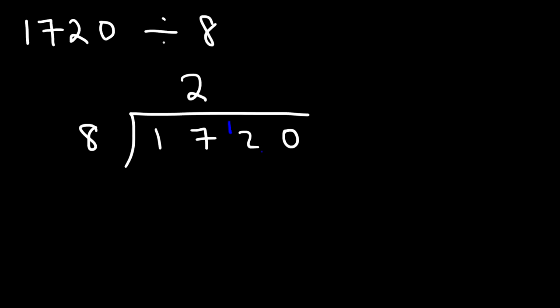Now you need to write that 1 with the next number 2 and then you need to ask yourself how many times does 8 go into 12? 8 goes into 12 one time. 8 times 1 is 8 and the difference between 12 and 8 is 4. So that 4 you transfer it to the next number. So you have 40.